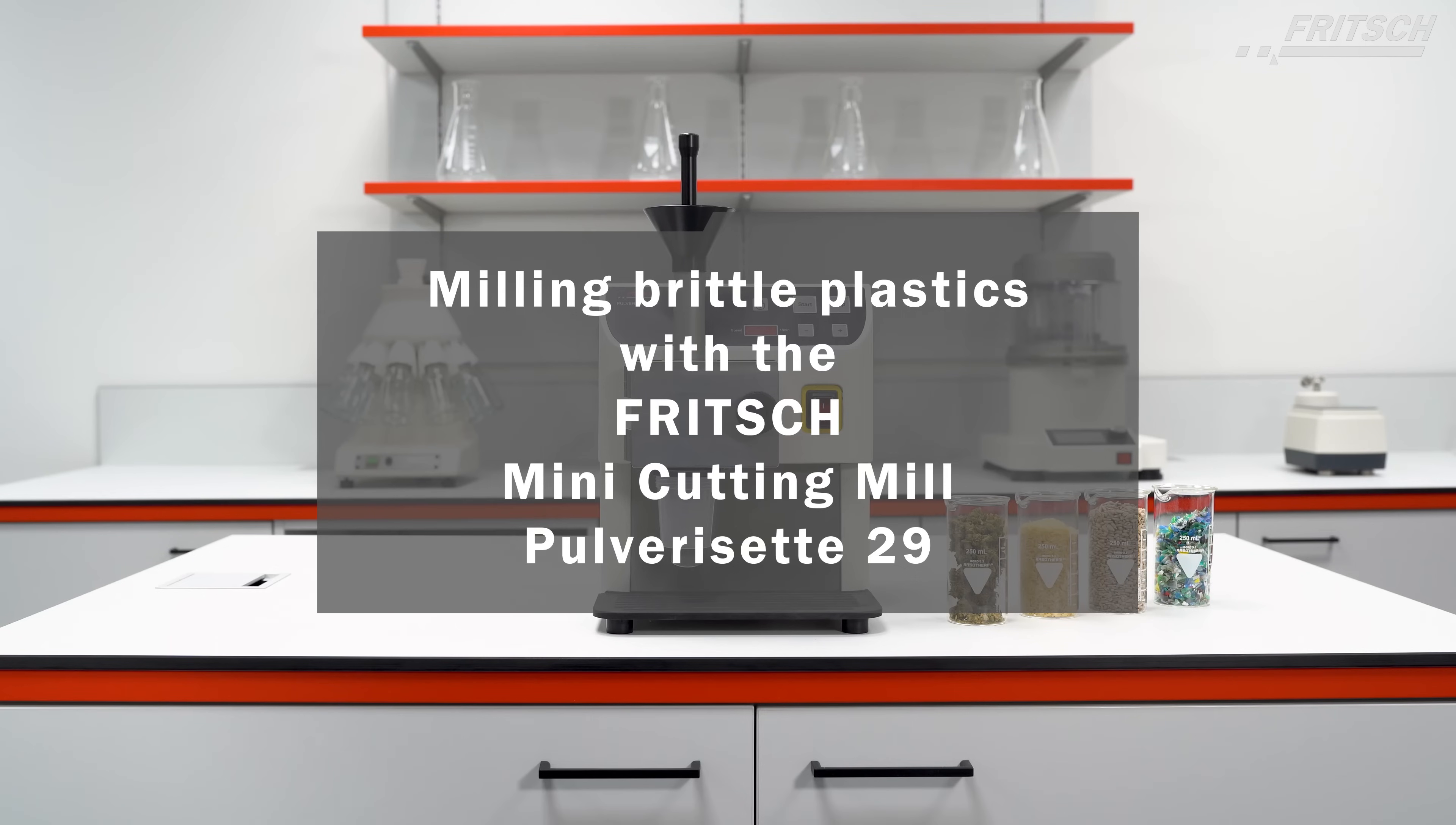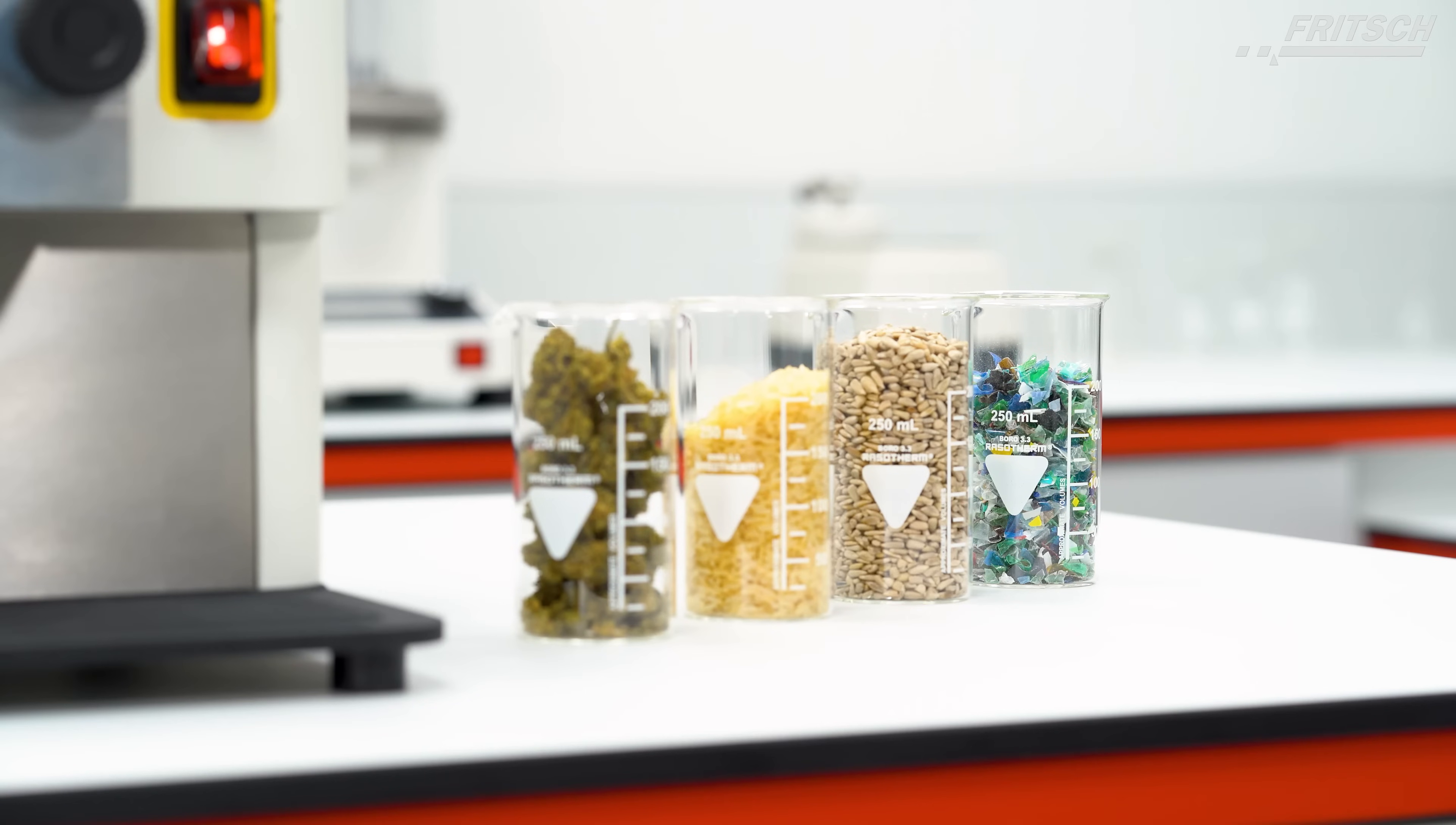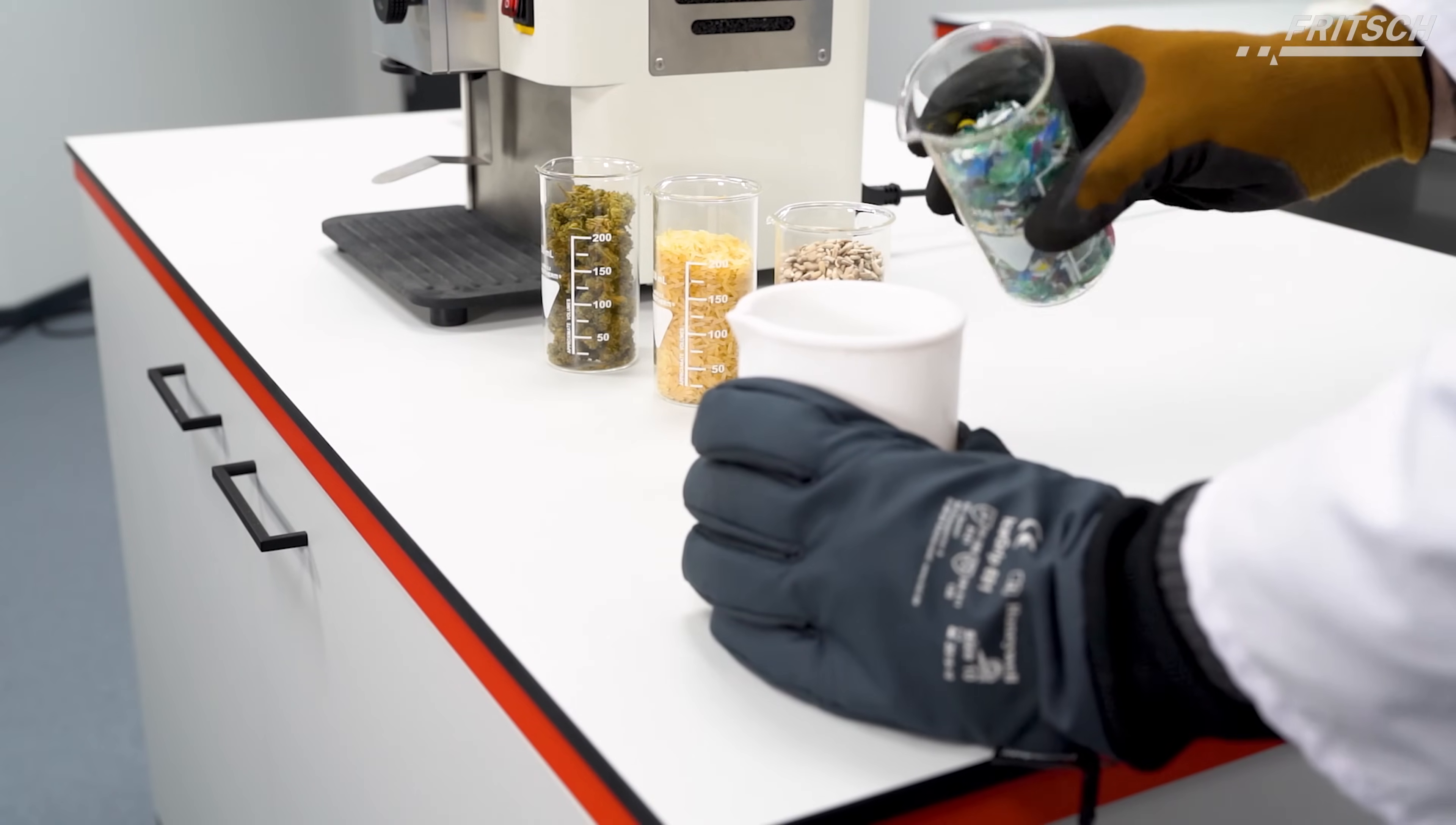The Strong and Compact Mini-Cutting Mill Pulverisette 29 by Fritsch. In this application video, we will guide you through the process of milling brittle plastic with the P29.